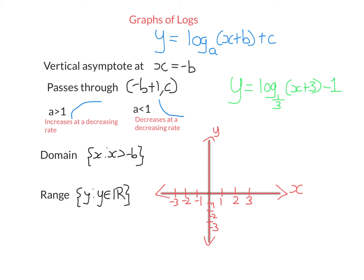Let's graph this function. Log base 1/3 of x can be converted using the change of base formula to log base 3 of x over log base 3 of 1/3. Since log base 3 of 1/3 equals minus 1 — because 3 to the power of minus 1 equals a third — this is actually the same as minus log base 3 of x. Because the base a third is less than 1, it's going to start big and decrease at a decreasing rate. When graphing, the first thing we do is draw the asymptote at x equals minus b — here, minus 3. The graph will have a vertical asymptote at x = −3 and never reach it.